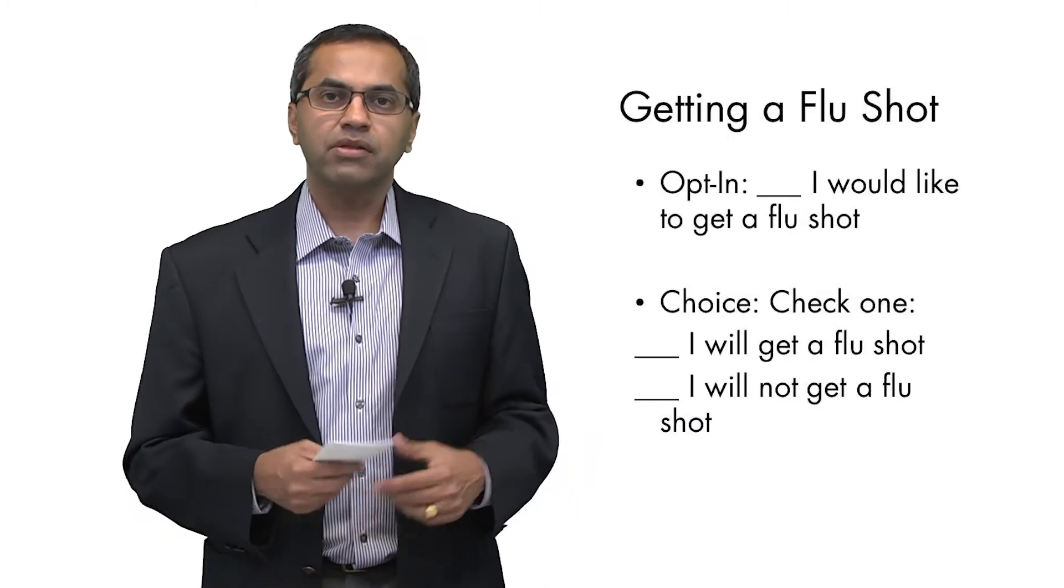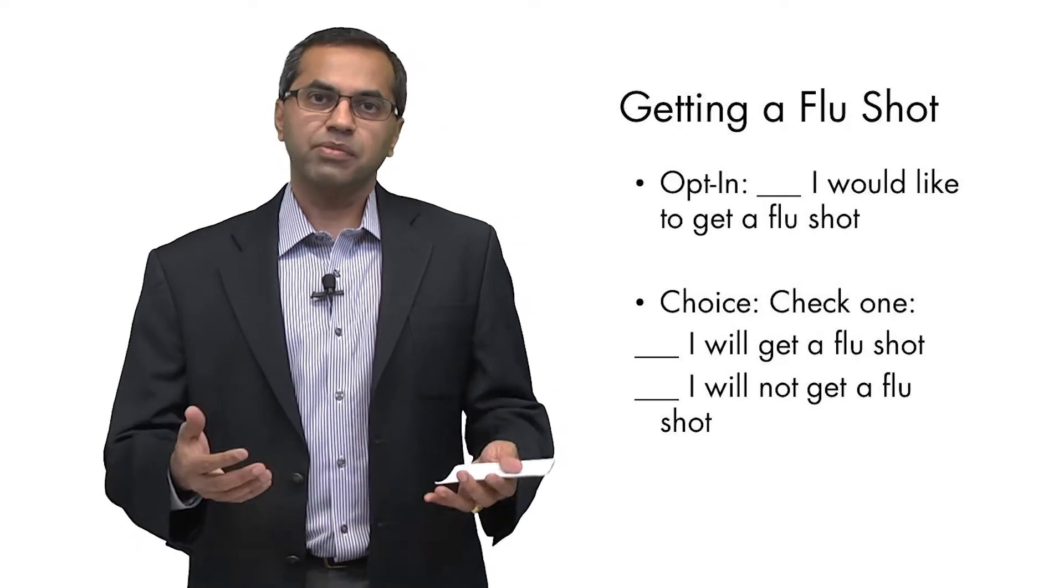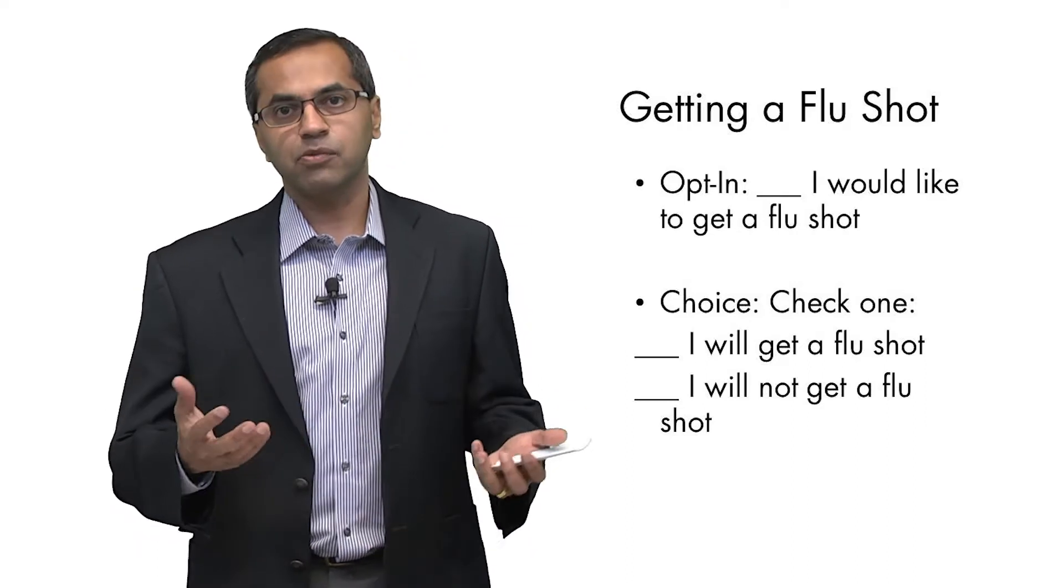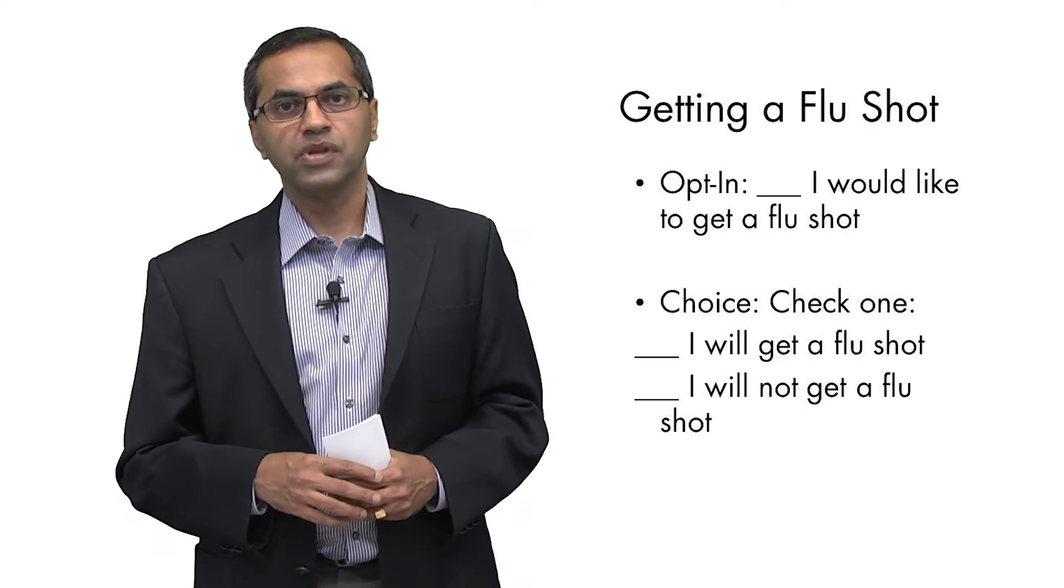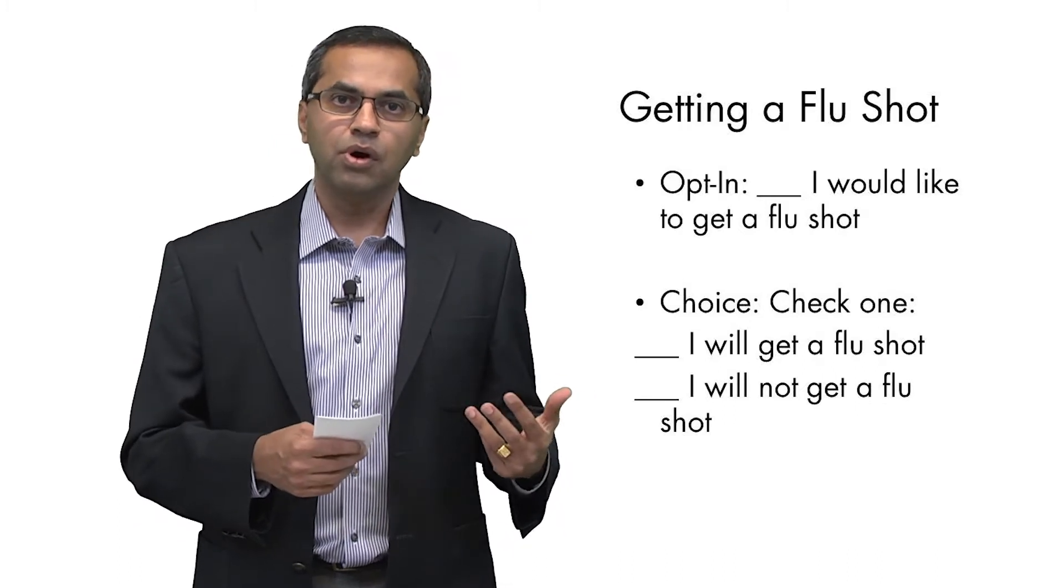Every time participants in that particular organization got a message about a flu shot, they were then presented with a card or questionnaire that asked them for their intention to get the flu shot. In a standard opt-in condition, they saw the message and had to check a box which said yes, I want to get a flu shot this fall. In a choice condition, they were given two options: they could check either yes I do, or no I don't.